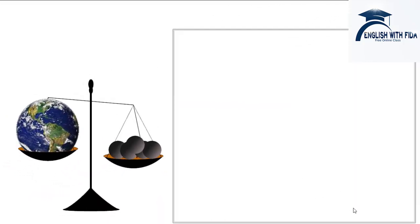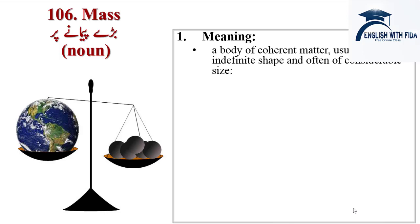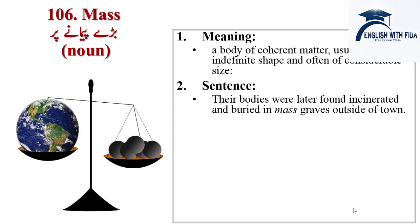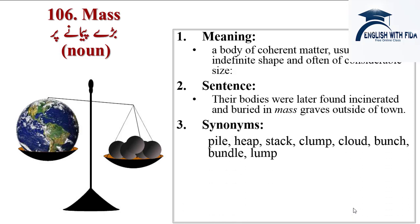Bismillahirrahmanirrahim students, I hope vocabulary is going on very well. Today we will begin from 106 to 120. Our first word is mass, meaning a body of coherent matter usually of indefinite shape and often of considerable size. Sentence: their bodies were later found incinerated and buried in mass graves outside of town.